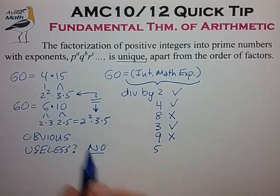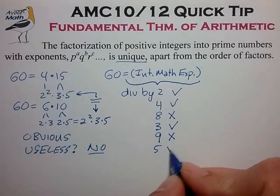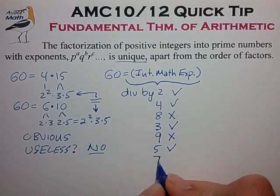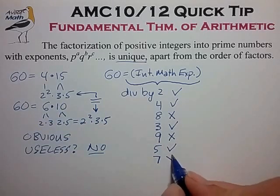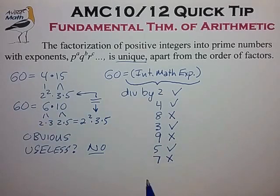Is it divisible by 5? Yes it has a factor of 5. Is it divisible by 7? Well there is no factor of 7 in the decomposition of 60, so it is not divisible by 7. Is it divisible by 11? No it is not. And you can continue this list as far as you need to.